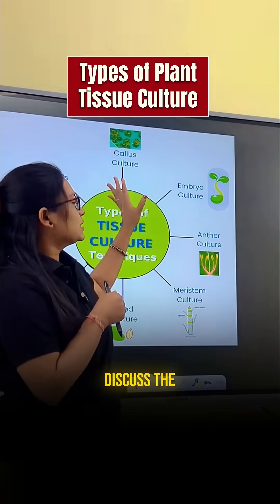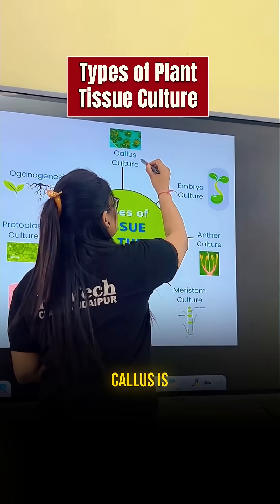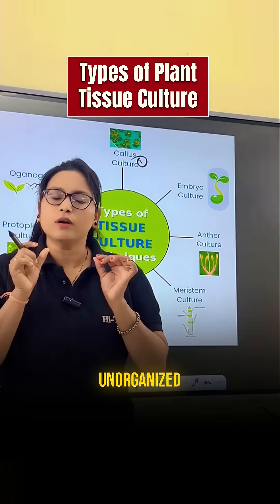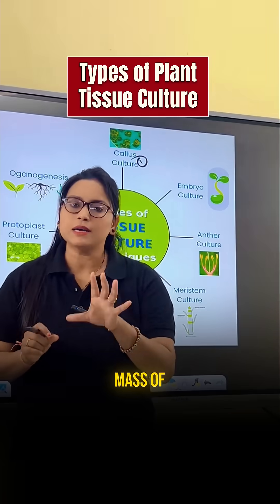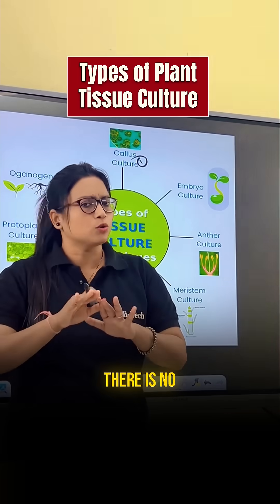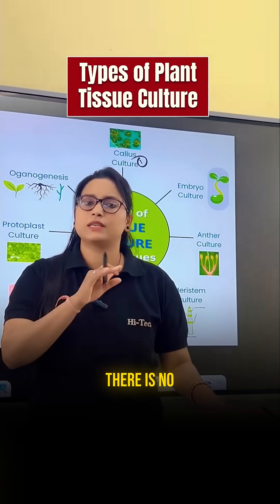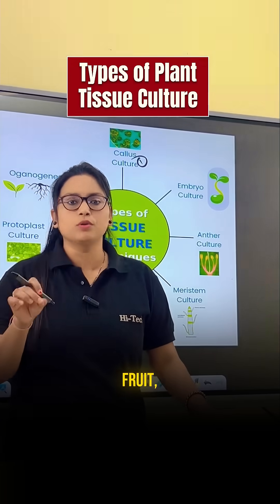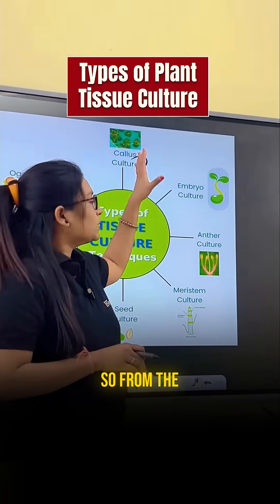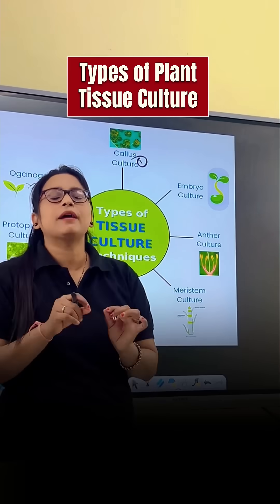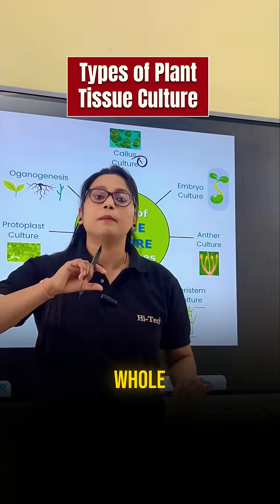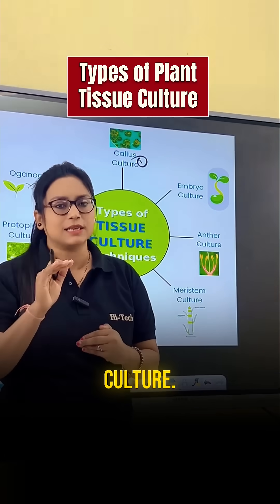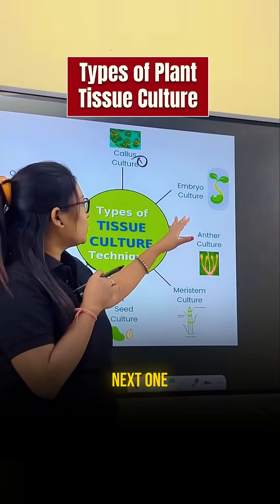Let's discuss the first one: callus culture. Callus is an unorganized mass of plant cells — there is no differentiation, no distinct parts like root, fruit, or leaf. If a complete whole plant is generated from the callus, that comes under callus culture.